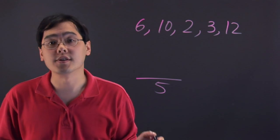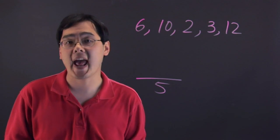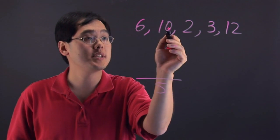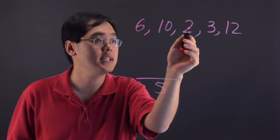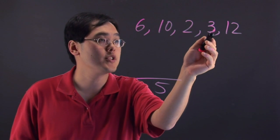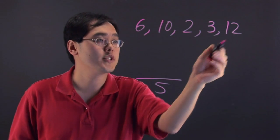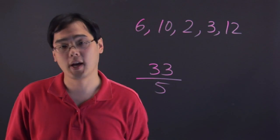Where you go from there is you're going to take all 5 of your numbers and you're going to add them. 6 plus 10, that's going to give you 16. 16 plus 2, that's going to give you 18. 18 plus 3 is 21. And 21 plus 12 is going to give you 33. Okay?